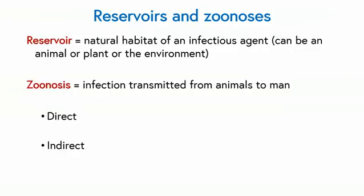Some infections have a reservoir — that's to say the place where they normally live is outside of man. Their natural habitat could be in an animal, a plant, or the environment. If it's an animal and the infection transmits to man, it's known as a zoonosis.